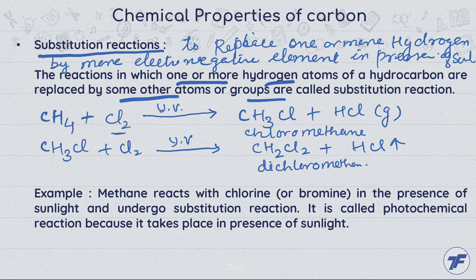In this way, methane reacts with chlorine, bromine, or iodine in presence of sunlight. This reaction is called a photochemical reaction.